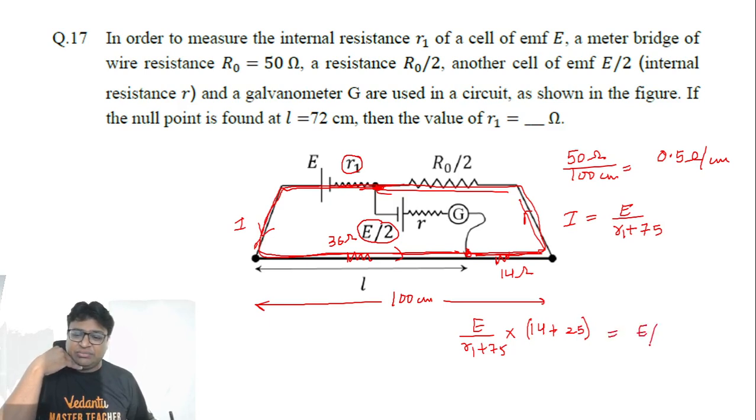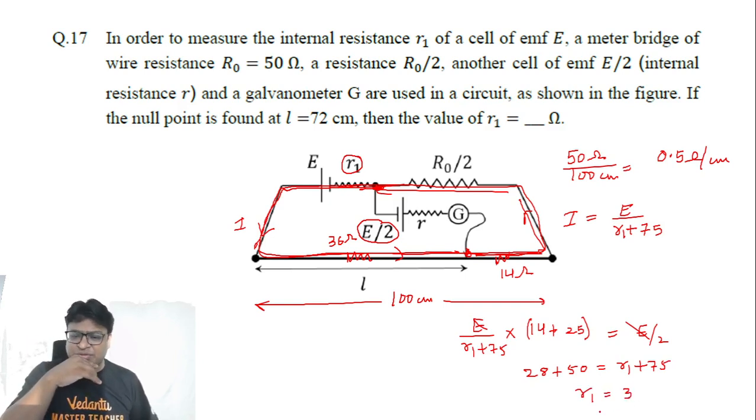This is equals to E by 2. So E gets cancelled. If we solve this, we get 28 plus 50 is equals to r1 plus 75.